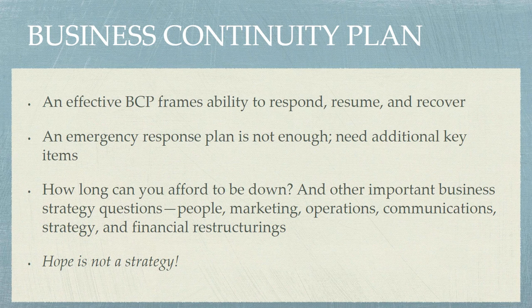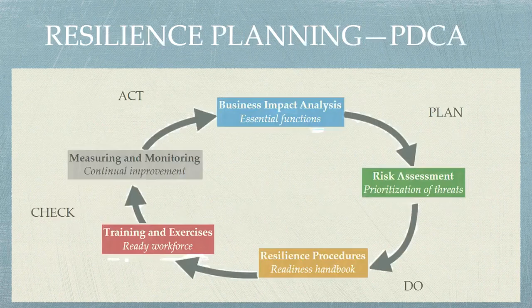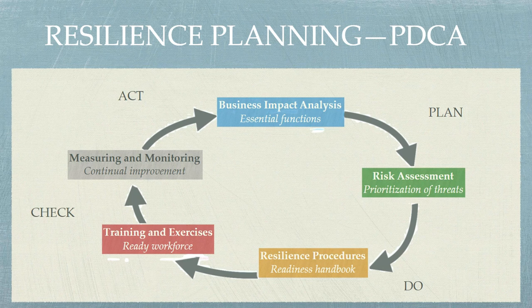Basically, hope is not a strategy — that's what I'm trying to get at with all these elements of the business continuity plan. Business resilience planning can go into a PDCA cycle — plan, do, check, act. We've got our essential functions in the business impact analysis, our prioritization of threats in our risk assessment, then we build those procedures in the handbook, do some training and exercise to ready that workforce, check to make sure that everybody is ready, and do continual improvement. Continual means as it happens, not waiting for an event. Always, always, always try to do continual improvement, and then act — incorporate those improvements and replan, redo, recheck, and react.